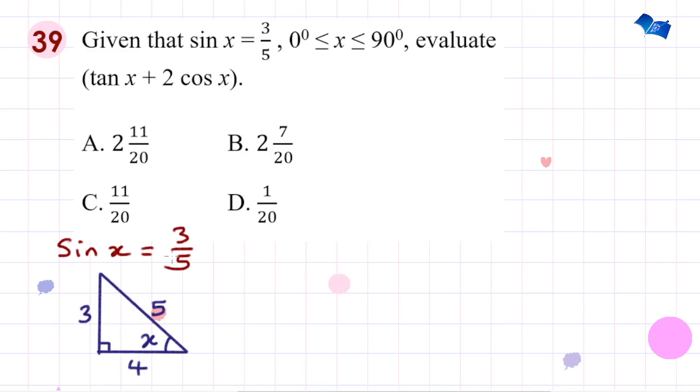We can tell what tan x would be. Tan x is opposite over adjacent, opposite is 3, adjacent is 4. And then cos x would be adjacent, which is 4, over hypotenuse, so 4 over 5. Now we know all trig ratios, we can simply replace them in this expression.